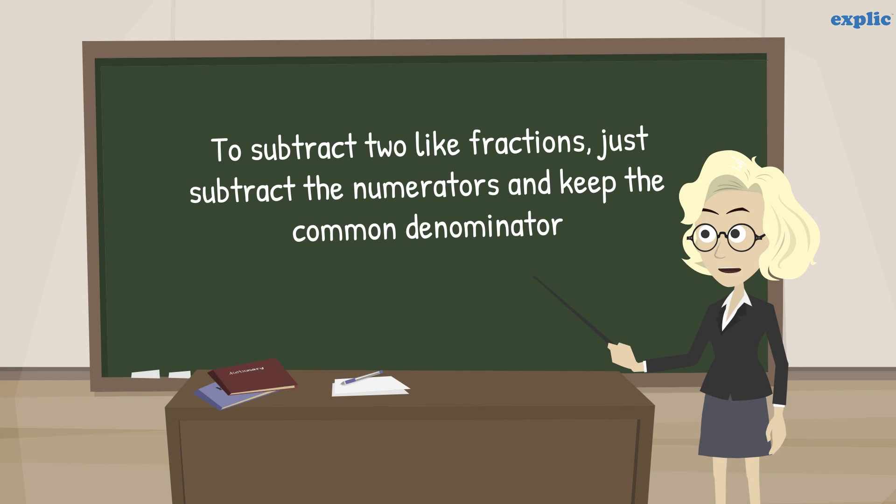This implies, to subtract 2 like fractions, just subtract the numerators and keep the common denominator.